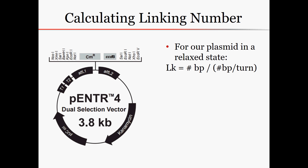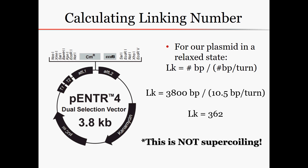For our plasmid, pEntry4, we would calculate it as follows. We have 3,800 base pairs and 10.5 base pairs per turn, which gives us that the two backbone strands are linked approximately 362 times. It is important to note that this is not supercoiling — this would be a relaxed plasmid. Even in the absence of supercoiling, because of the helix and the nature of B-form DNA, the DNA will already be interlinked 362 times.